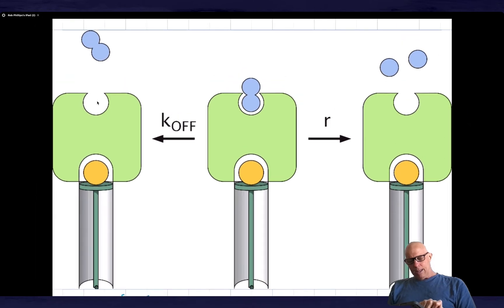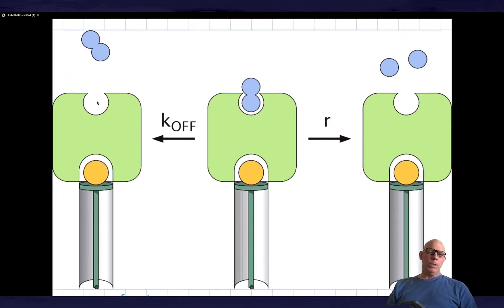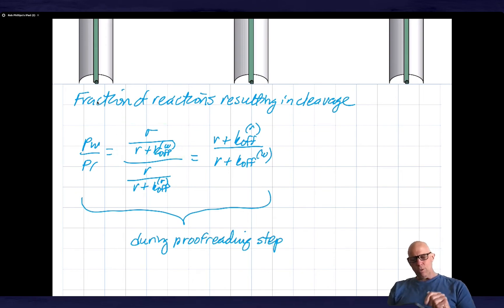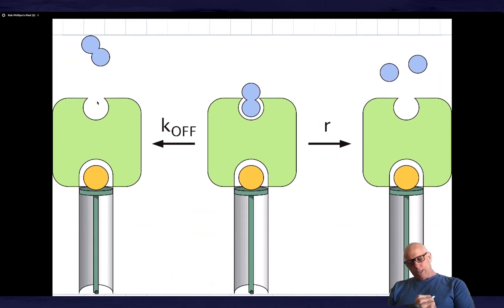And the way I think of it is shown here. So what I mean by that is that at that moment, the moment in which we push the piston in and we induce this conformational change, the bifurcation is either the substrate will be cleaved, that's the right-hand pathway shown here, or the substrate will fall off, and that's the pathway shown here. And qualitatively, what I want to say is that the fraction of reactions resulting in cleavage is given by R over R plus K off.